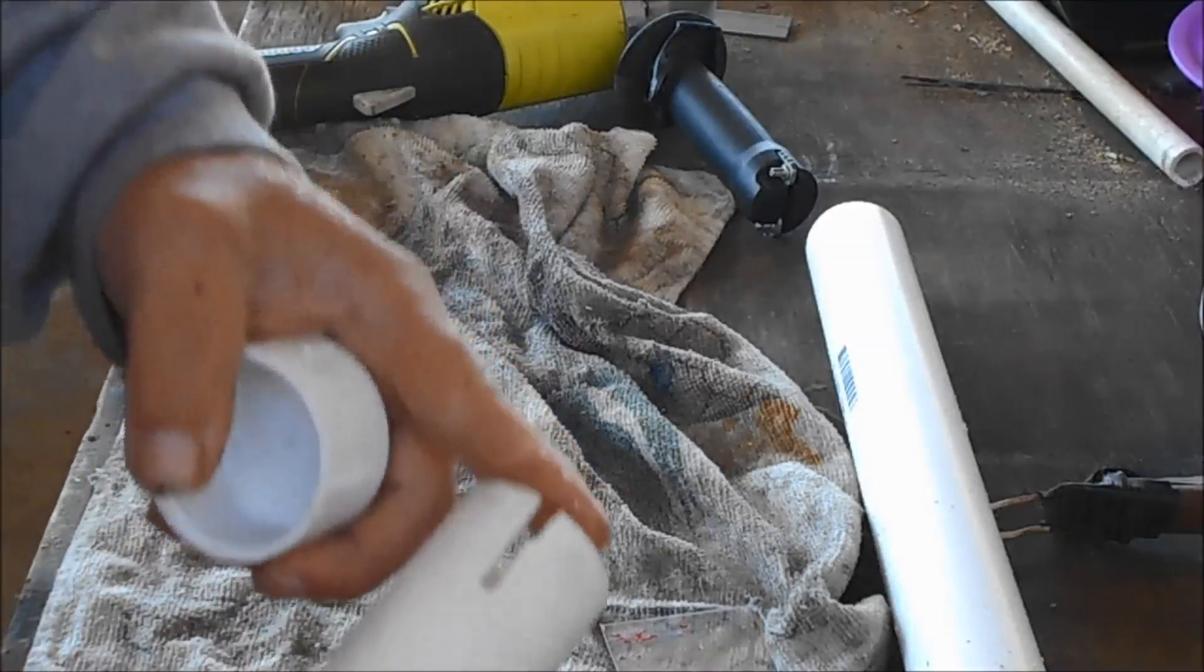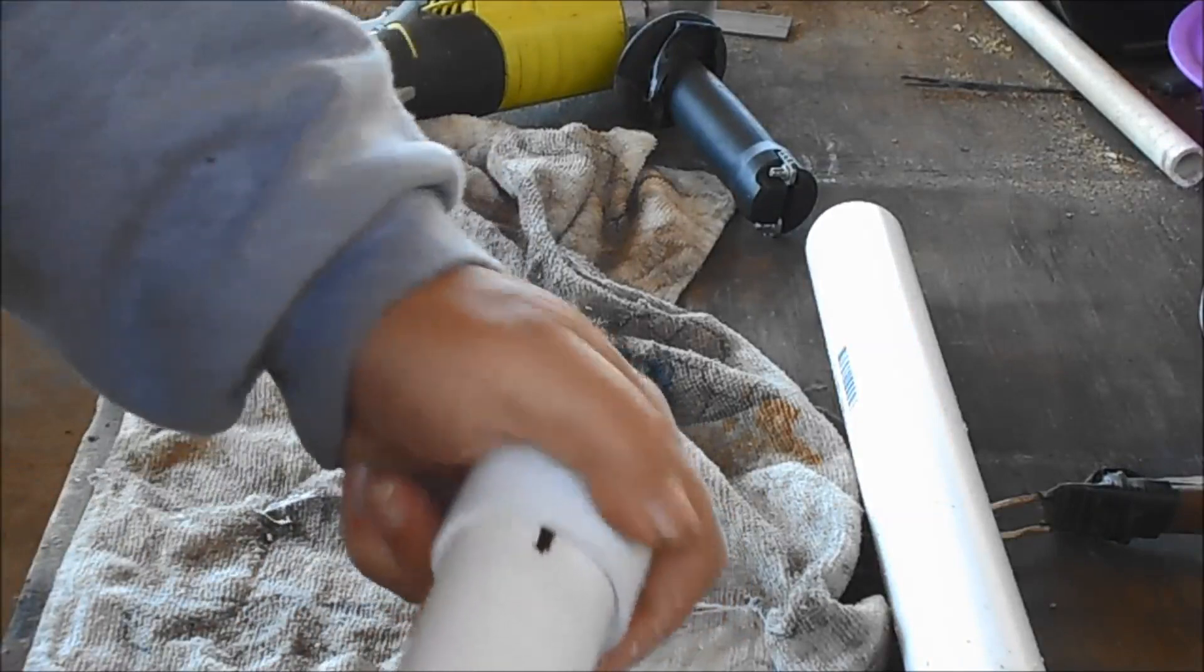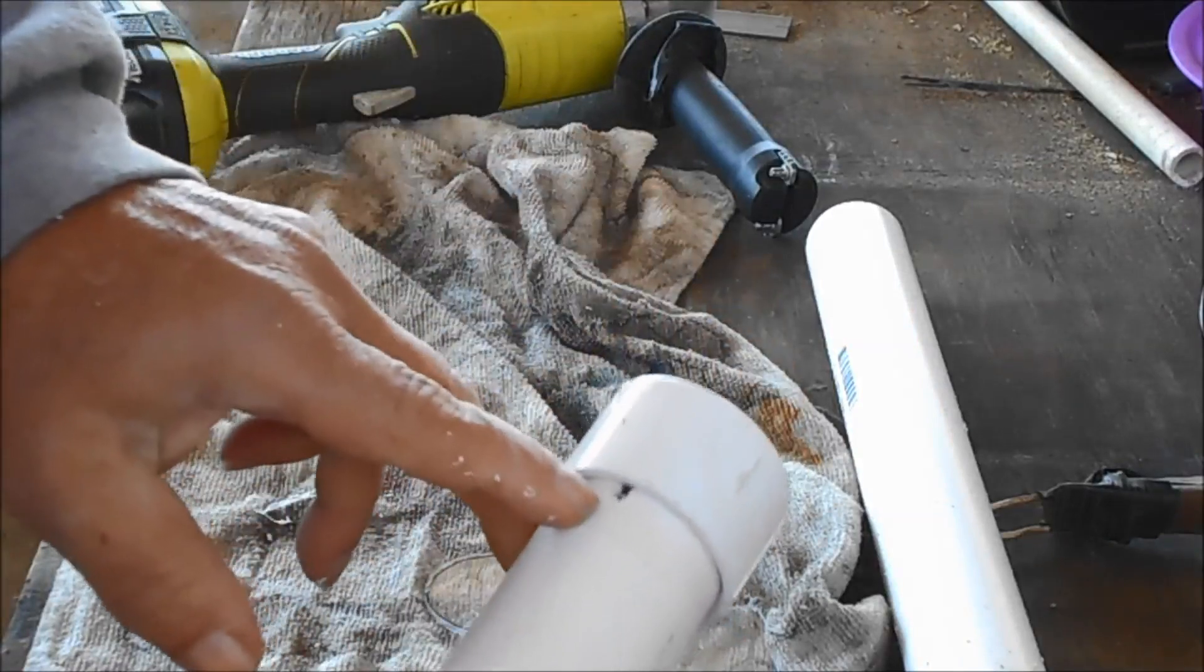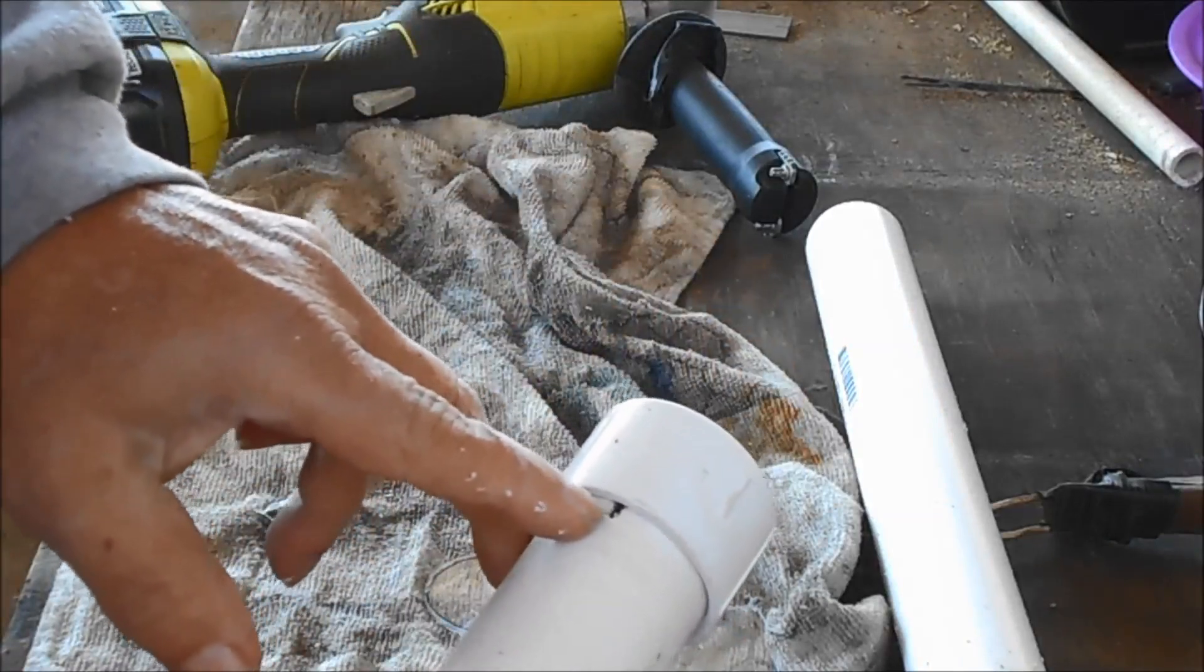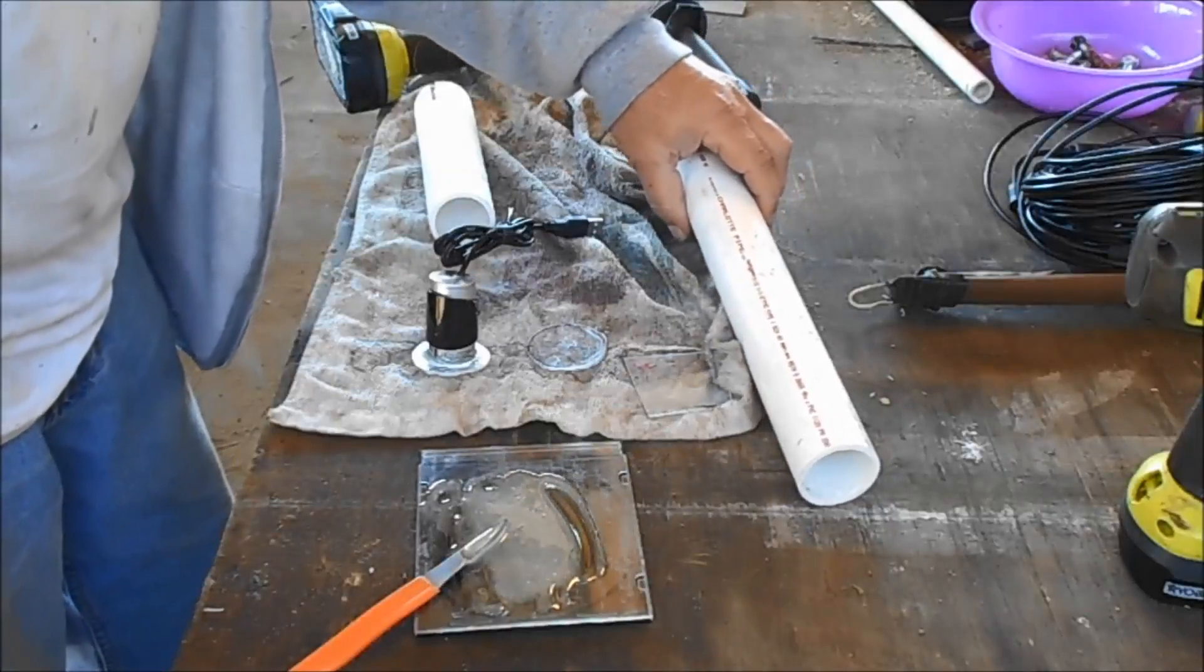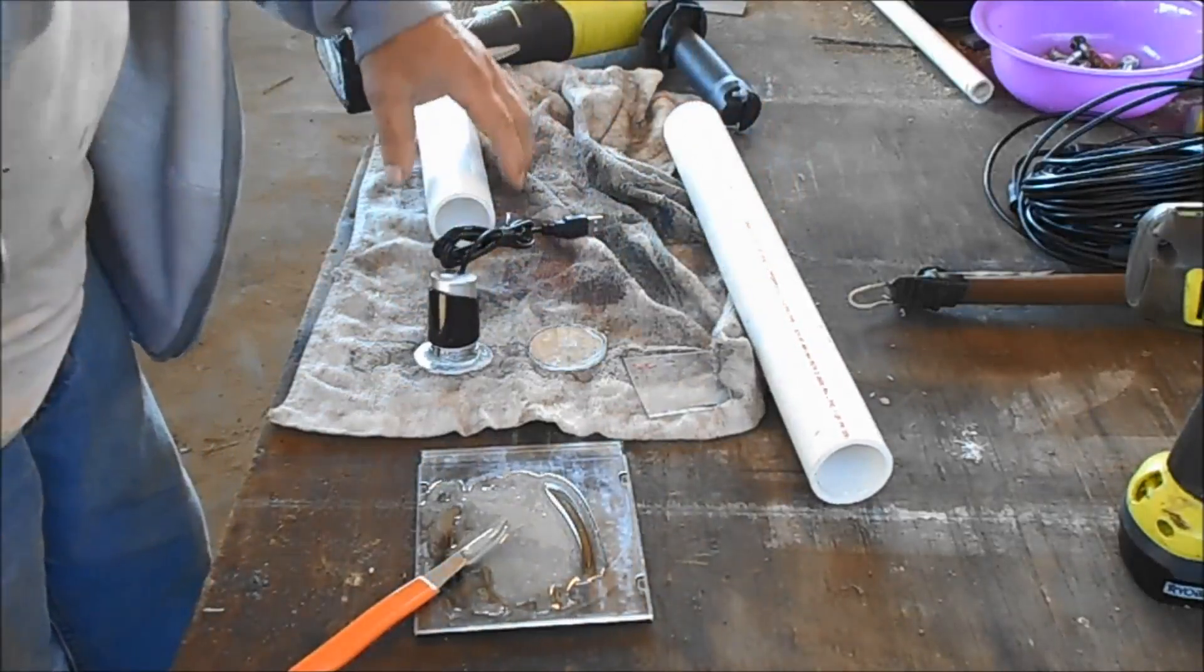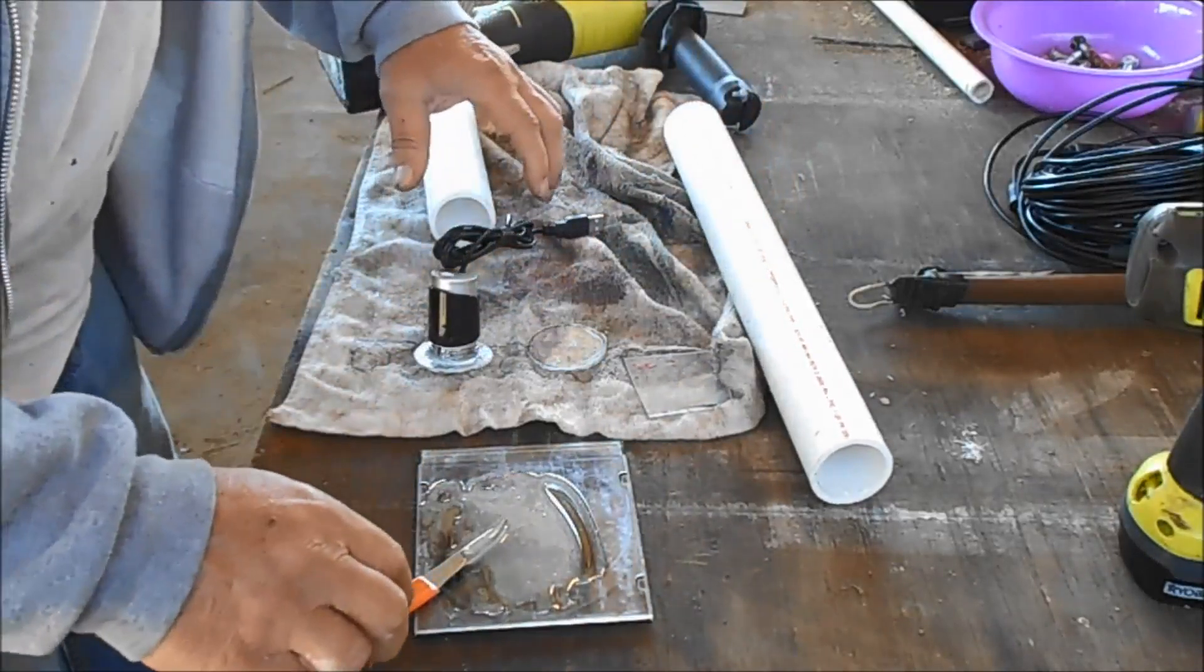You want to make sure when you cut your notch, you're leaving a hole about like this right here for the cord to stick out. This is an inch-and-a-half pipe, by the way. If you get one of these cameras, they got them all over eBay.